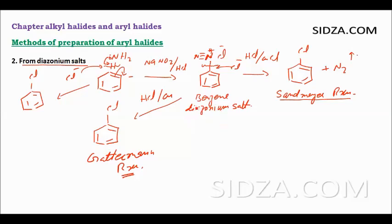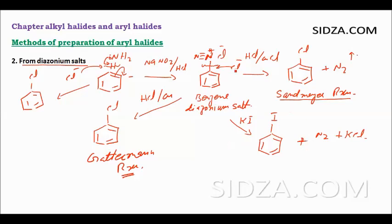If we want iodobenzene, we treat benzene diazonium salt with potassium iodide (KI). The iodide ion I- replaces the nitrogen, which leaves as N2 gas, giving iodobenzene and potassium chloride. This confirms that nitrogen in the diazonium salt can be easily replaced by various nucleophiles. Even water can replace the nitrogen to give phenol. Thanks for watching.